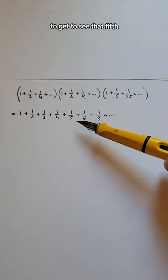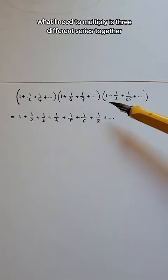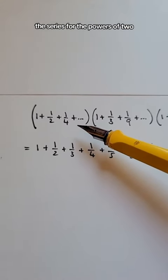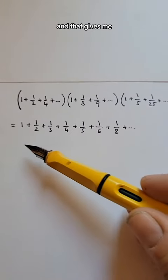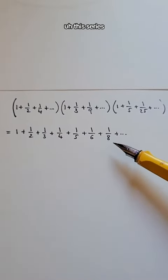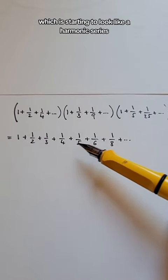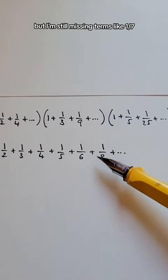To get to see that fifth, what I need to multiply is three different series together, the series for the powers of 2, the series for the powers of 3, and the series for the powers of 5. And that gives me this series, which is starting to look like a harmonic series, but I'm still missing terms like a seventh.